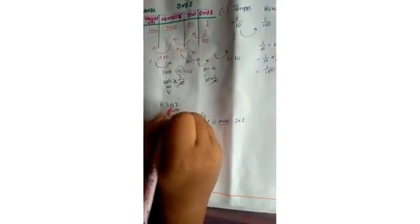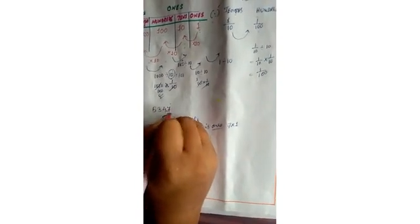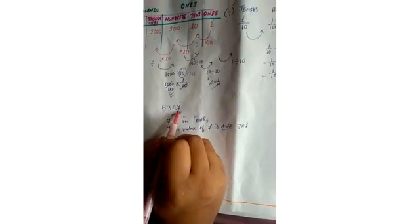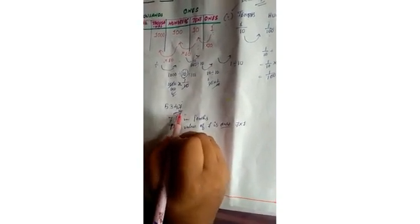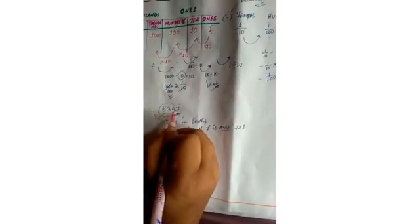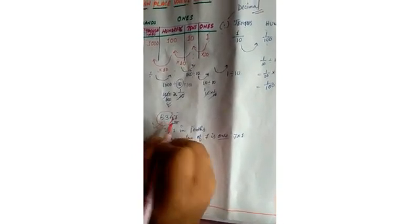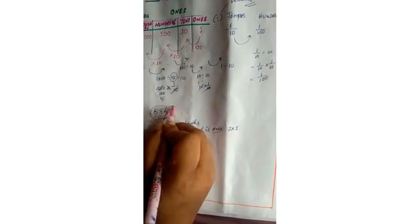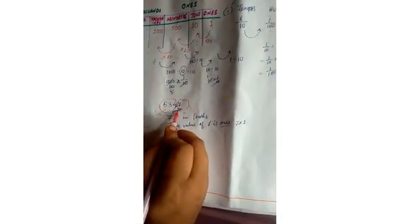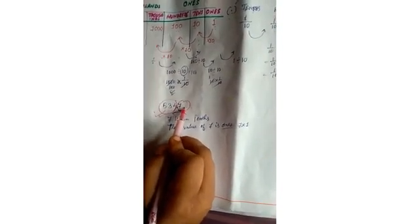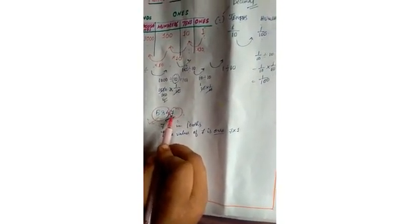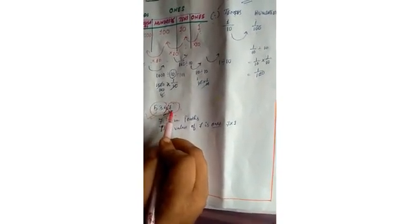So you are getting confused. Let me show you by putting a point here — then it will be clear to understand. We can easily say 5 is in the tenths place and 4 in the ones place. To separate the whole number part and the fractional part of a number, we put a small dot in between which is called the decimal point. After the decimal point, we just mention the digits — for example 534.7 we read as five hundred thirty-four point seven.